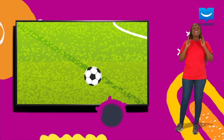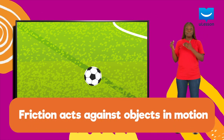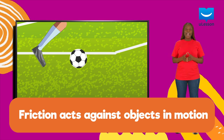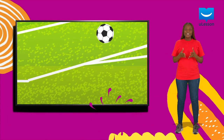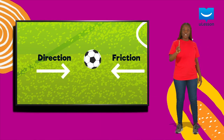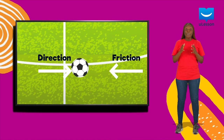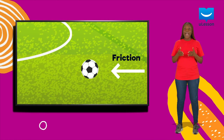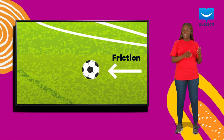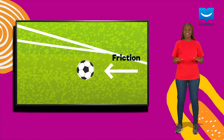Let's learn. The force that tends to act against objects in motion is known as friction. The kick that made the ball move acted in one direction, causing the ball to speed up. But the friction between the ball and the ground acted in the opposite direction, causing the ball to slow down.